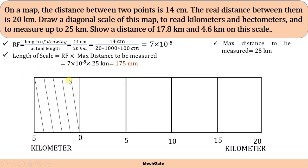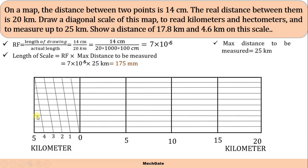Draw the diagonal line joining zero with one — this is nothing but 1 kilometer. Further, we have to divide 1 kilometer into 10 equal parts to get hectometers, because 1 kilometer is equivalent to 10 hectometers. Divide this height into 10 equal parts using the scale. The numbering goes 1 to 10 and this indicates hectometer. This is my complete scale, with RF shown below.